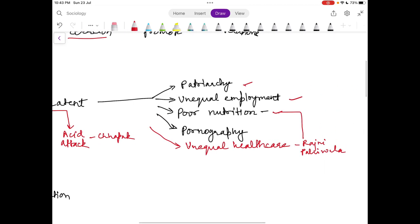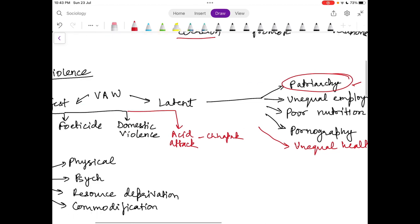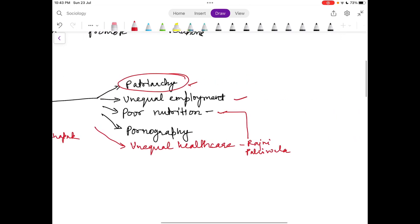On patriarchy, you can quote Sylvia Wolby, who identifies specific structures like state, family, and sexuality as the site of patriarchy, how they perpetuate certain notions of subjugation of women and consideration of women as inferior to men. This discussion on patriarchy can even be linked to Paper 1, like whatever we have studied on gender and the thinkers that we might have utilized there.